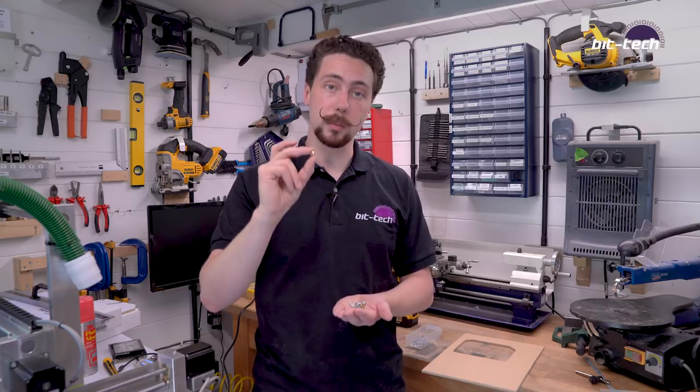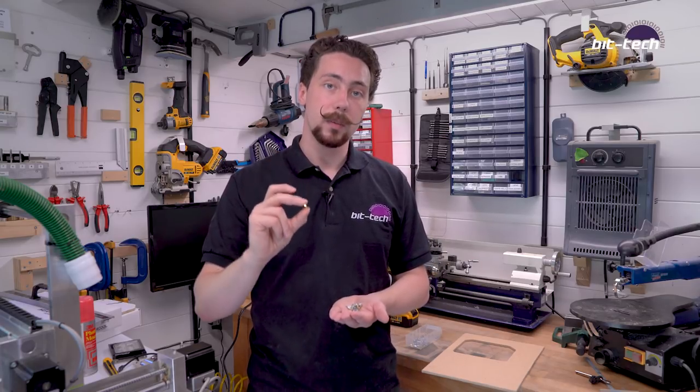So quite often you're going to end up using say an industry standard one which is a 6-32. So it's not metric, that's imperial, or you can use an M4 which is bigger yet. The 6-32 ones are very common in cases that you're going to buy off the shelf, so you may have a few of those lying around from a previous build for instance.